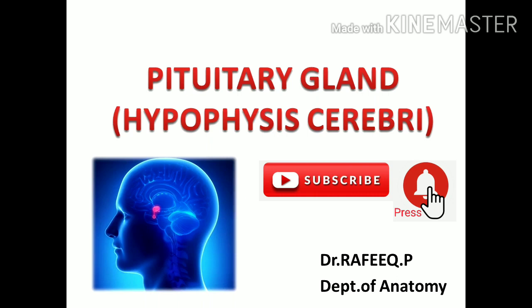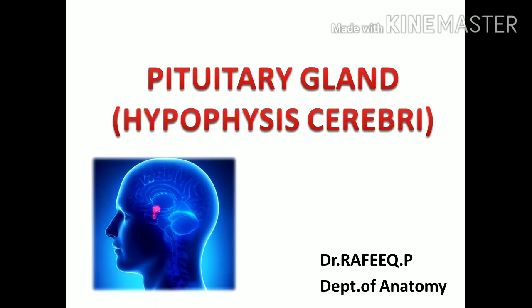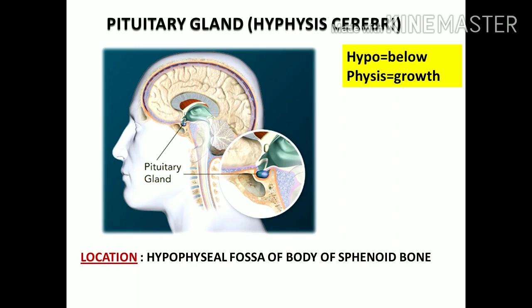Hello everyone, let us learn the anatomy of the pituitary gland. Structurally, the pituitary gland is very tiny, but functionally this is the most important endocrine gland in our body, because the hormones of the pituitary gland have influence on the activities of other endocrine glands. Hence this gland is also called the master endocrine gland.